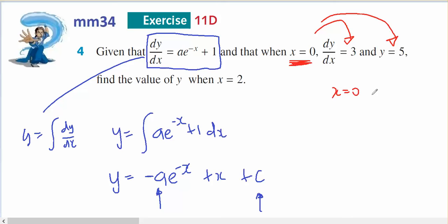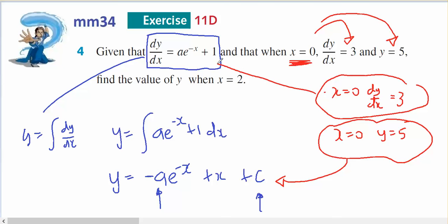So I've got when x equals 0, dy dx equals 3. And when x equals 0, y equals 5. So I could put this into that equation and get one equation. And I can put this into that equation to get the second equation to solve them simultaneously.